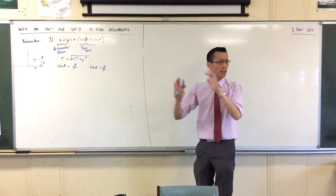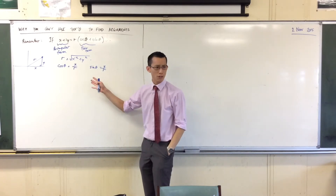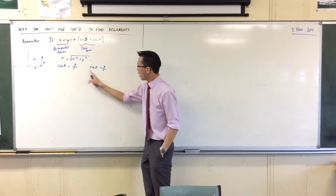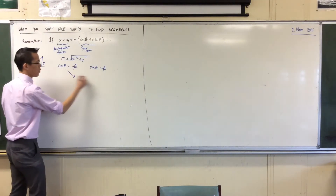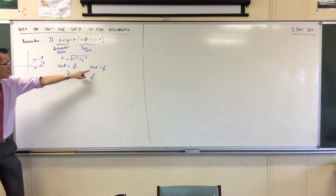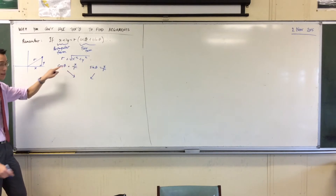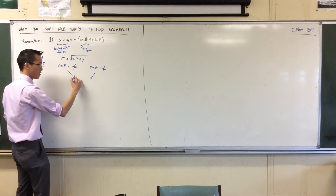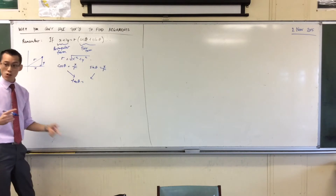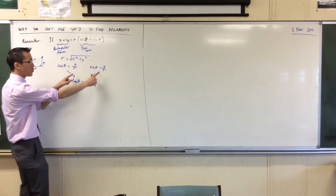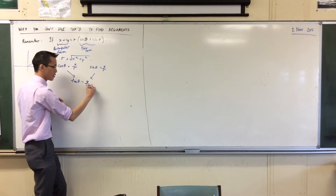Now the question becomes — just like an auxiliary angle — why can't I combine these two equations? Why can't I say, if I divide sin theta by cos theta I get tan theta, and the r's will cancel, so I get tan theta equals y on x?